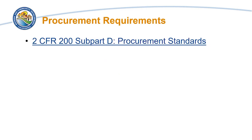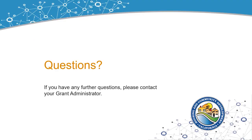The procurement standards are located in the uniform administrative requirements at 2 CFR Part 200, Subpart D. Thank you for attending this California Housing and Community Development training session on informal procurement methods. If you have any further questions, please contact your grant administrator.